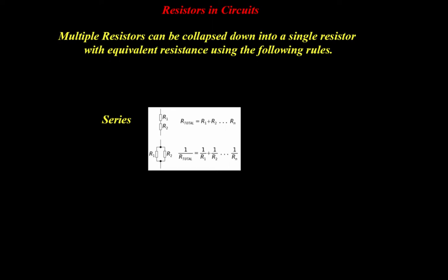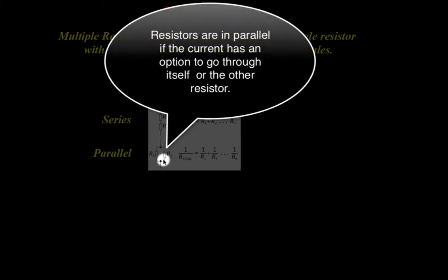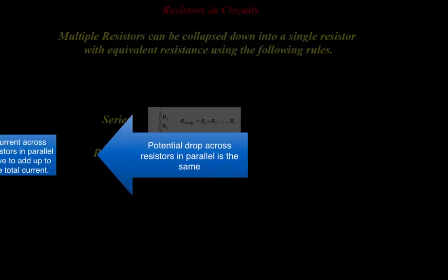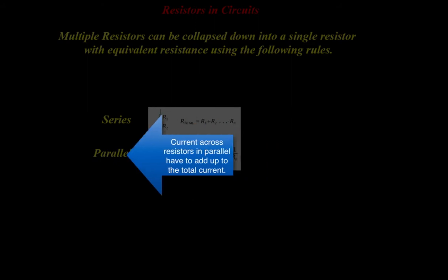Now we could have some resistors that are in parallel. In parallel means that the current can either go across one resistor or across another. Here, the potential drop across the resistors is the same, whereas the current or the charge across each resistor is not.